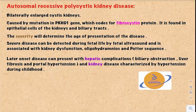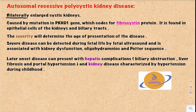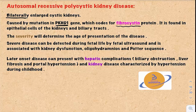Next is autosomal recessive polycystic kidney disease. This presents as bilaterally enlarged cystic kidneys, where the tissue of the kidneys becomes replaced with cysts. This is caused by a mutation in something called the PKHD1 gene, or polycystic kidney disease 1 gene. This gene codes for a protein called fibrocystin, which is found in the epithelial cells of the kidneys and the biliary tracts.